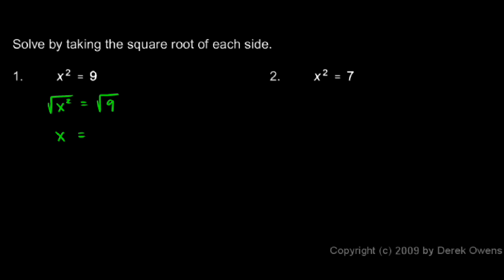And then the square root of 9, you think, well that's 3, right? Because 3 times 3 equals 9. And that's right. But also remember that negative 3 times negative 3 also equals 9.